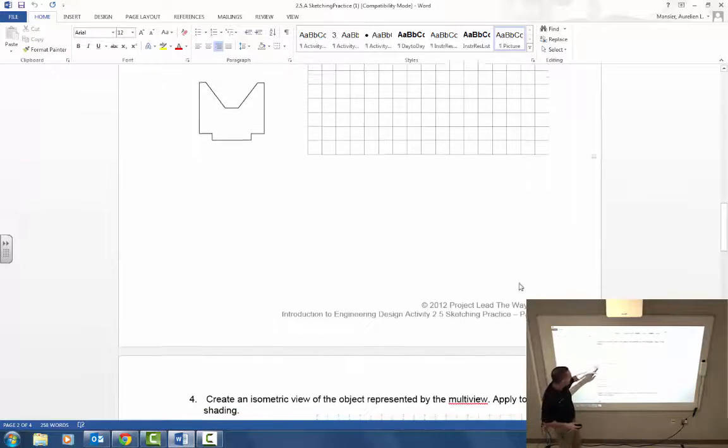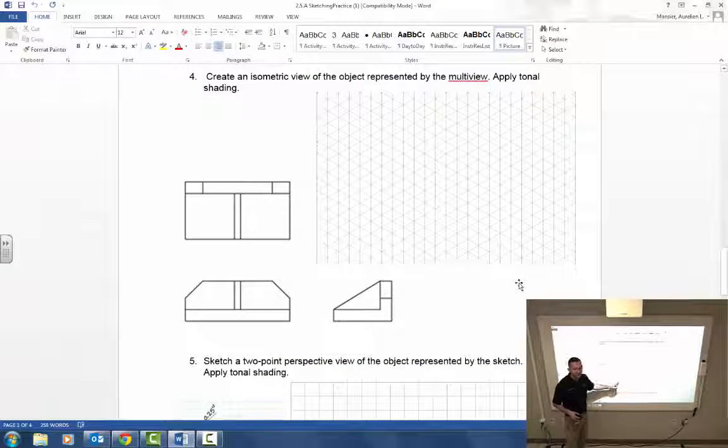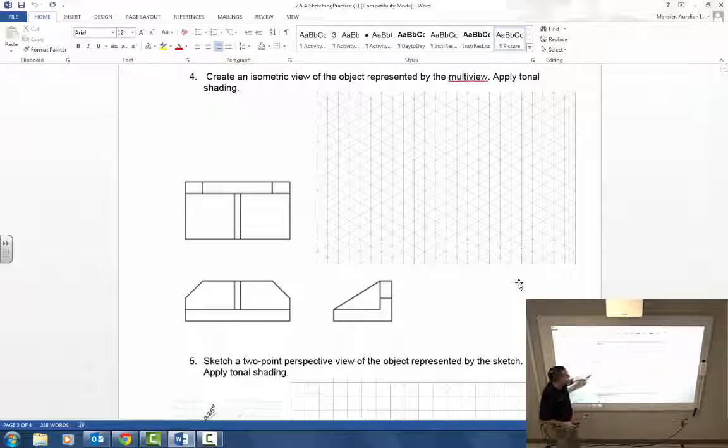We're going to do an isometric view based on this multi-view drawing. So based on what the top, front, and right view of this object look like, you're going to create an isometric drawing that'll go directly on the isometric paper.